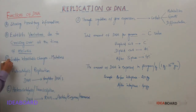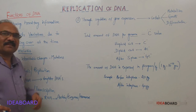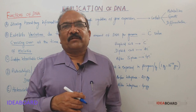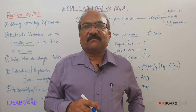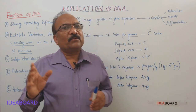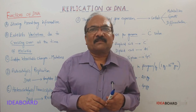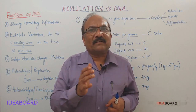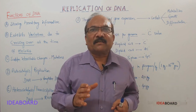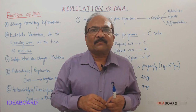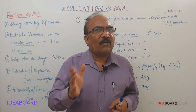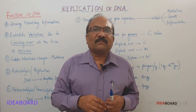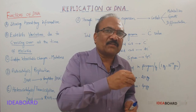Sometimes we come across sudden changes. The sudden heritable changes are called mutations. These mutations will lead to the formation of new species, and that ultimately helps in evolution. Mutations do not occur often — they occur gradually and slowly; they are of rare occurrence. These mutations are more common in plants than in animals.